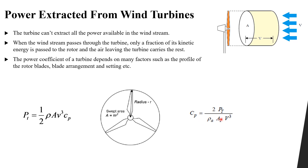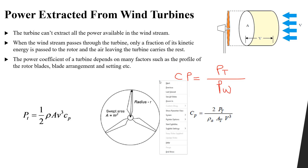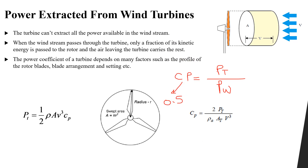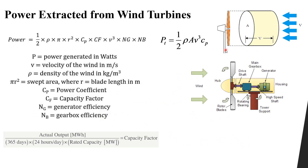Cp, which is the efficiency, is equal to the power absorbed by the turbine divided by the power available in wind. For example, if we have a power coefficient Cp of 0.5, it means the power absorbed by the turbine is equal to 0.5 of the power available in wind — so our turbine took 50% of the wind energy.